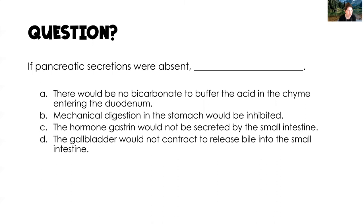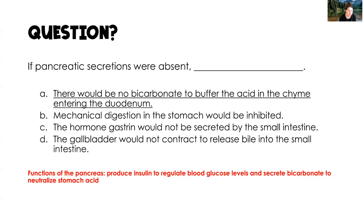If pancreatic secretions were absent — the best answer is there would be no bicarbonate to buffer the acid in the chyme entering the duodenum. The pancreas produces insulin to regulate blood glucose levels, and it also secretes bicarbonate, which neutralizes stomach acid.